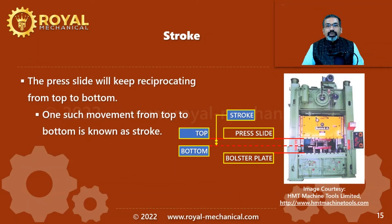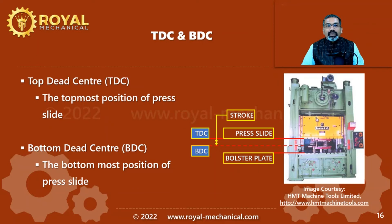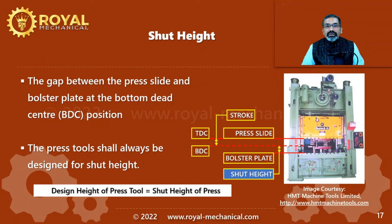The press slide keeps reciprocating from top to bottom; one such movement from top to bottom is referred to as a stroke. The topmost position of the press slide is referred to as TDC, or top dead center. The bottommost position of the press slide is referred to as BDC, or bottom dead center. The distance between the top surface of the bolster plate to the bottom surface of the press slide when the press slide is at the bottom dead center position is called the shut height.